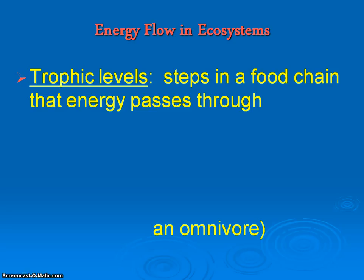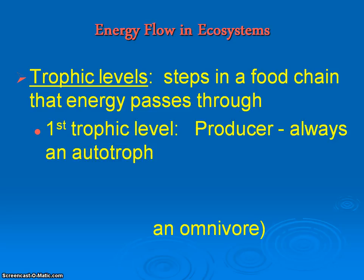Let's get into a little bit more detail as far as energy flow through an ecosystem. We know that there are different trophic levels, and these trophic levels show us what type of organism is in each level and the amount of energy being consumed within that particular level. The first trophic level is always the producers — those are our plants that take in sunlight and convert it into a usable form.